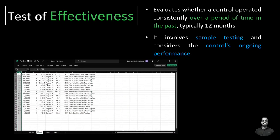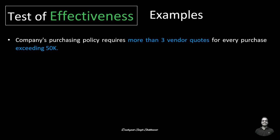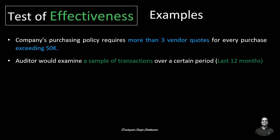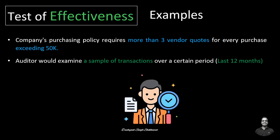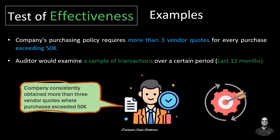Consider the scenario where the company's purchasing policy requires more than three vendor quotations for every purchase exceeding 50,000. An auditor would examine a sample of transactions over the last 12 months where purchases exceeded 50,000. If the auditor finds that the company consistently obtained more than three vendor quotations for all sampled transactions, the control's operating effectiveness is confirmed — meaning the control has been operating as designed and intended.